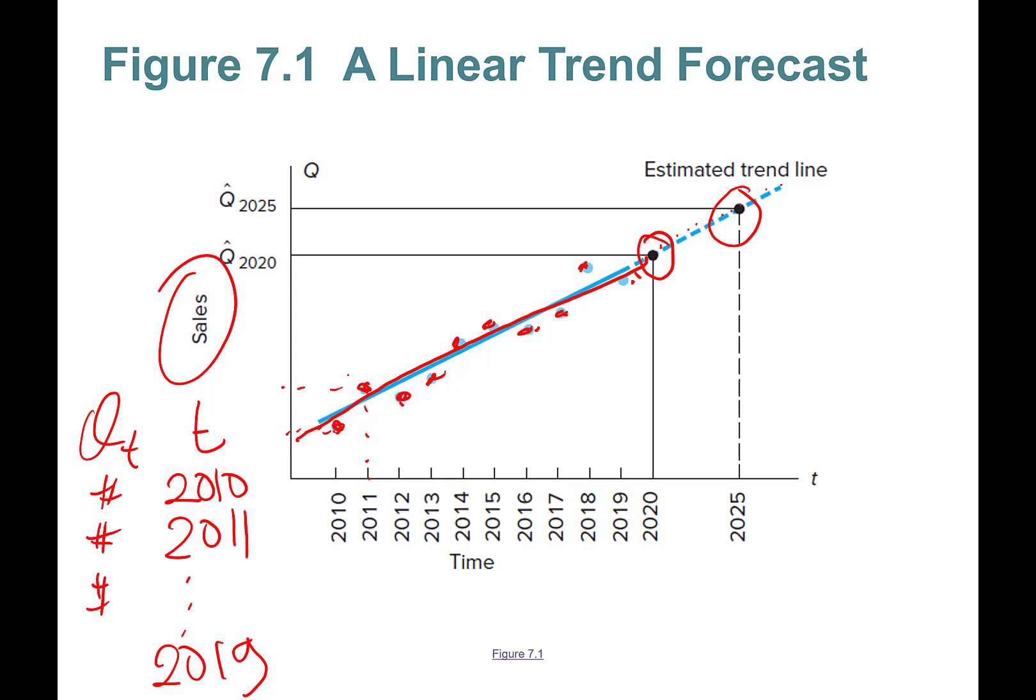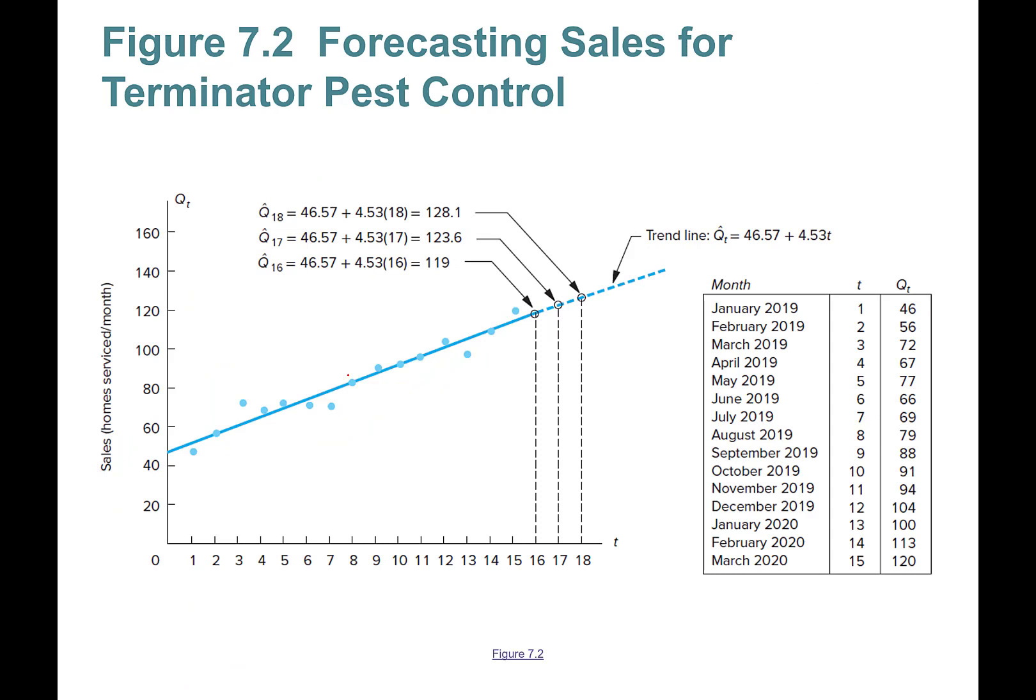An example looks like this - forecasting sales for Terminator Pest Control. This company started in January 2019 with 46 home services, showing increasing sales. They want to prove their sales are increasing consistently to qualify for a loan to buy one more truck. Data is 15 periods from January 2019 to March 2020.